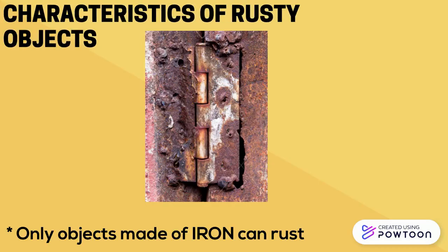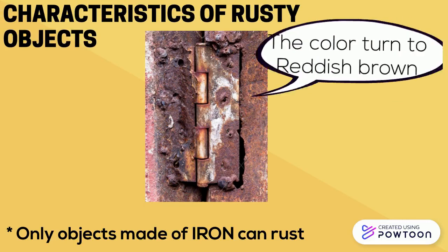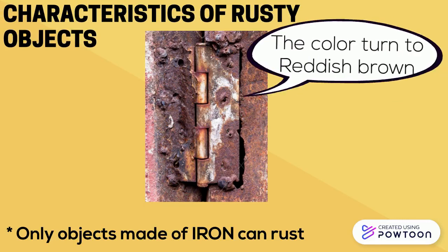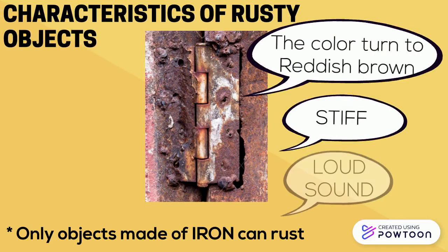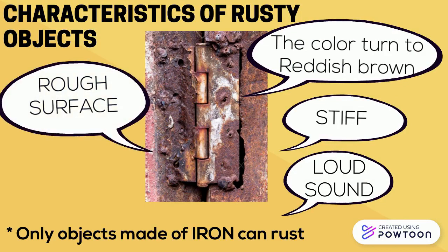These are the characteristics of rusty objects. The colour will turn to reddish brown, the hinges of doors or windows become stiff and produce a loud sound, and the surface becomes rough and brittle.